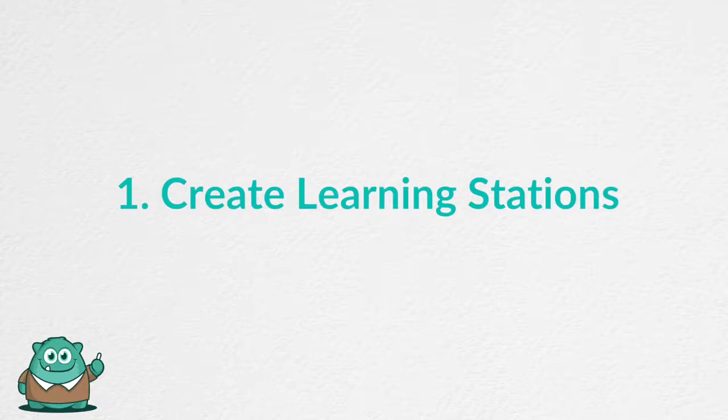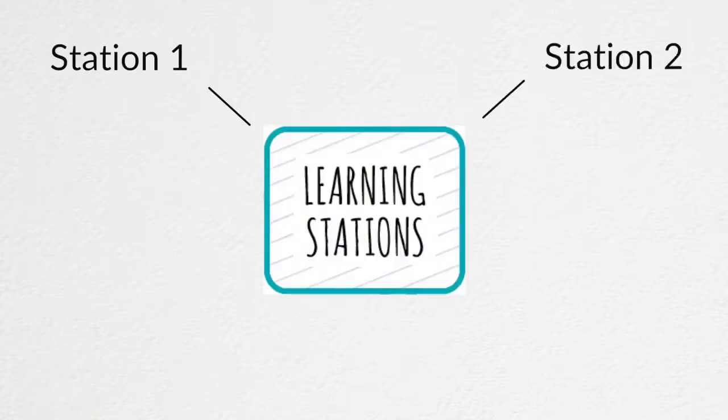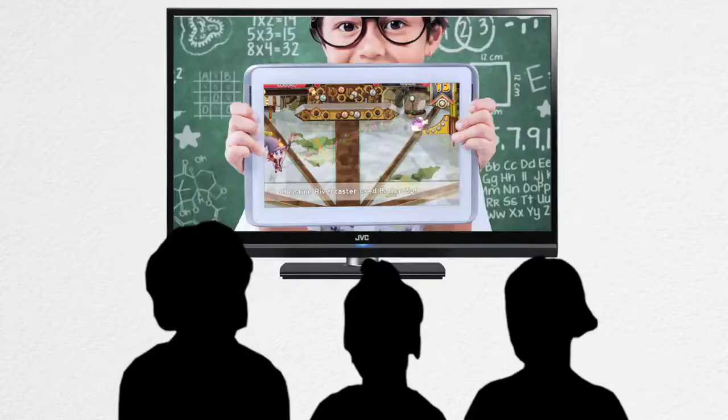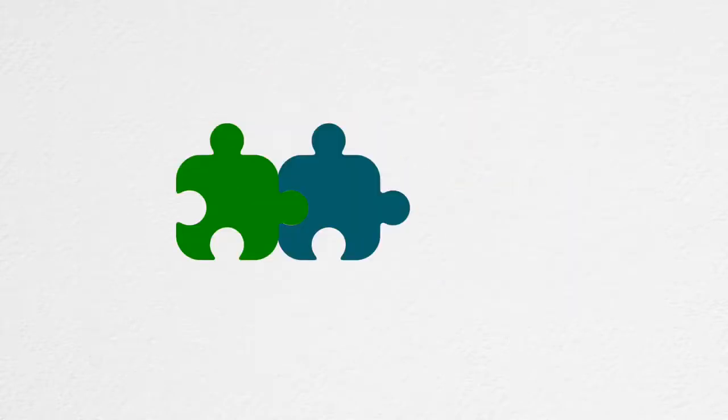Number one is create learning stations. Provide different types of content by setting up learning stations. For example, students can rotate between stations that involve watching a video, creating artwork, and completing puzzles.